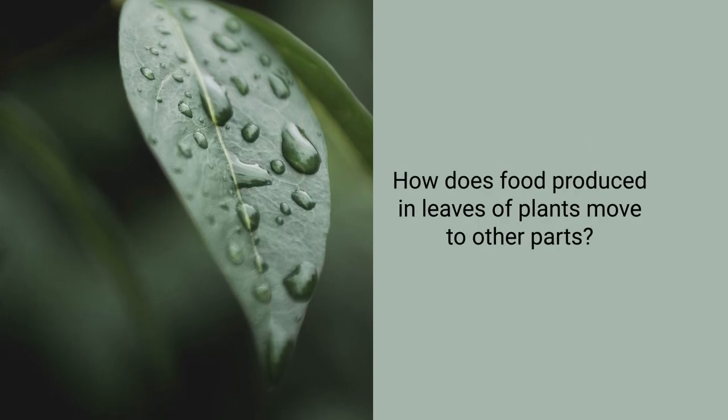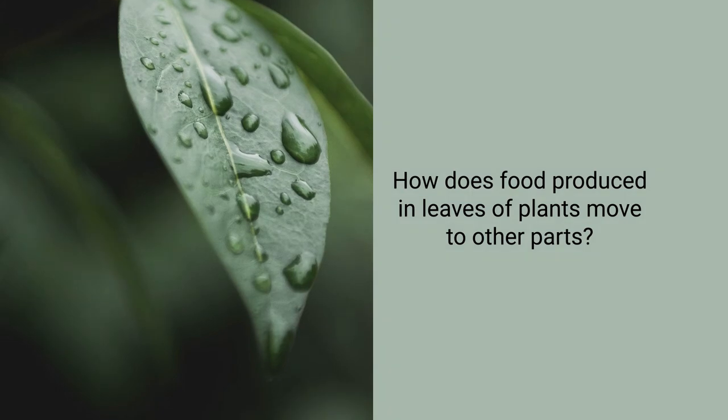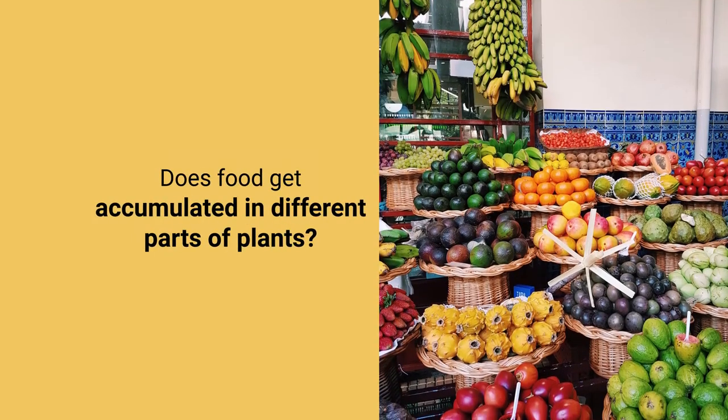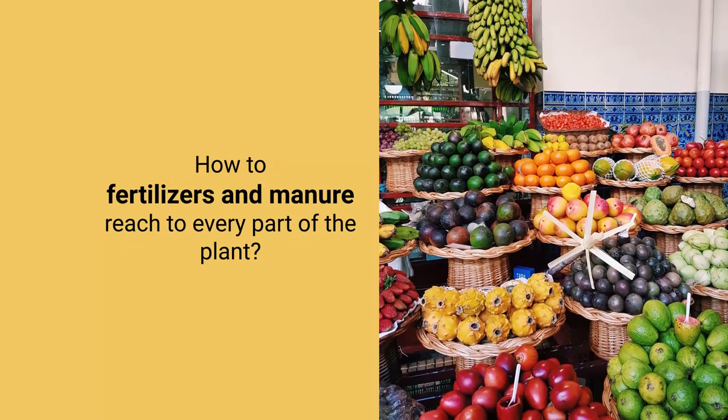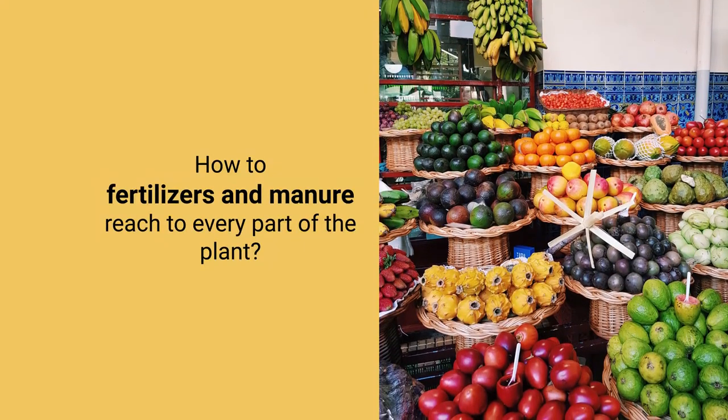If food is produced during photosynthesis in the leaves of a plant, how does it move towards other parts? Why do we say seeds and fruits are rich in vitamins? Why does food accumulate in different parts of plants? You can ask students to collect names or pictures of plants and the parts where food accumulates — like in potato it is in the stem, in carrot or radish it is in the root, and in many plants it is in the fruit.